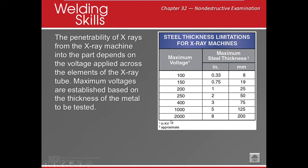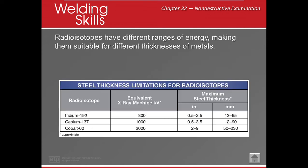X-ray machines require electricity and operate using kilovolts. The maximum is 2,000 kilovolts, allowing penetration through up to eight inches of steel. The key limitation of x-ray machines is that they require an electrical power source.